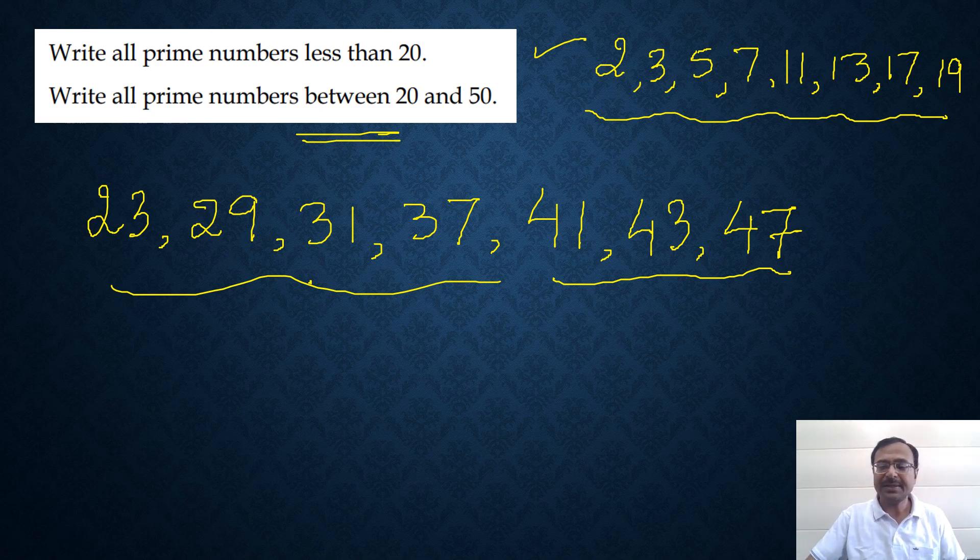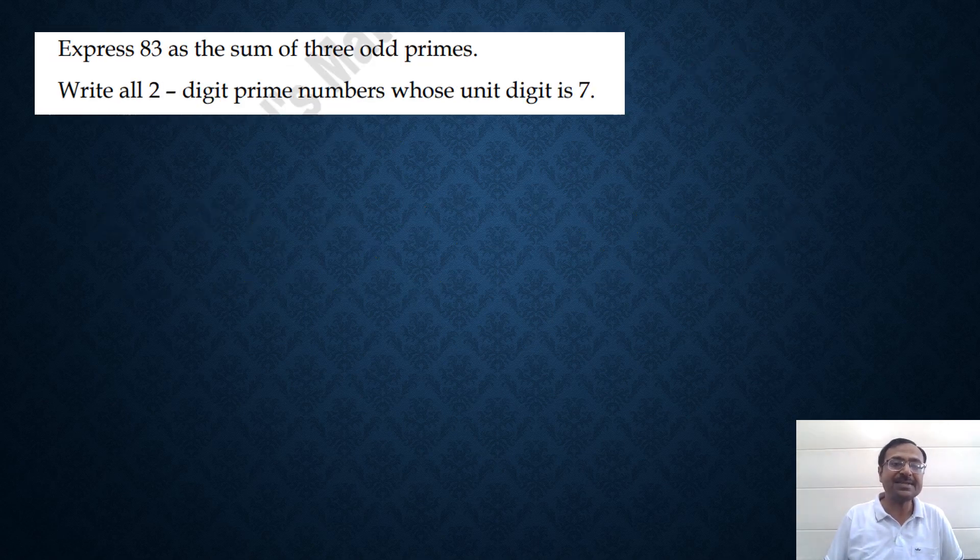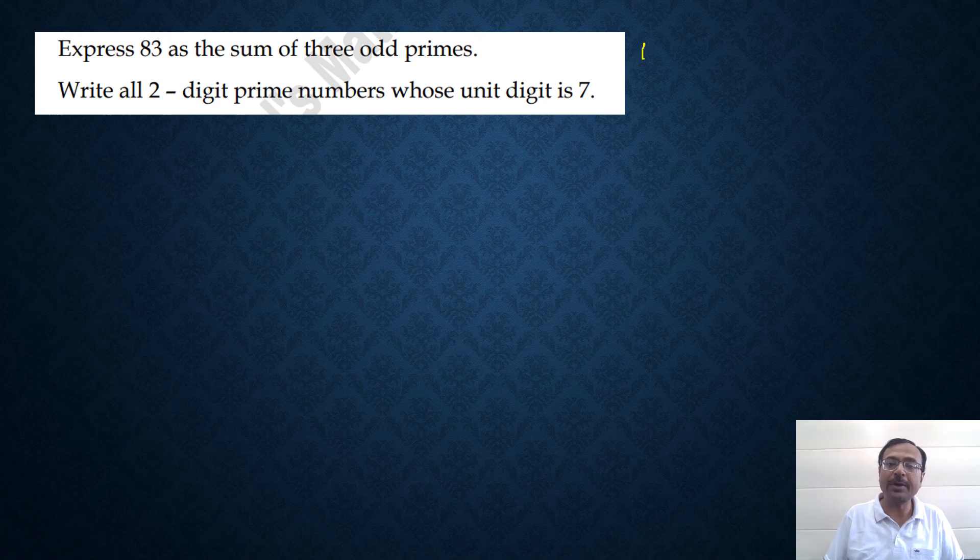There are some more very important questions in the practice PDF which I have made for this particular lecture. Express 83 as a sum of three odd primes. There is only one even prime, right? 2. So you have to express 83 as a sum of three odd prime numbers. There are numerous ways in which you can do this. I will tell you some of them and you can tell me some in the comments box below. I will wait for your answers for this question.